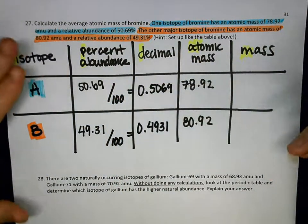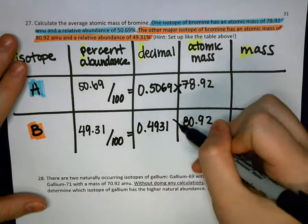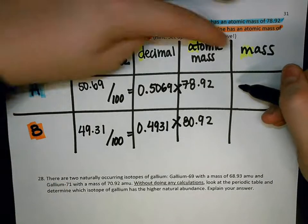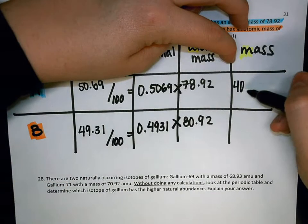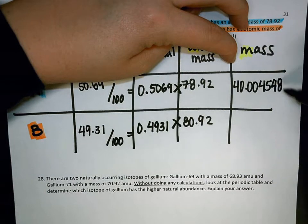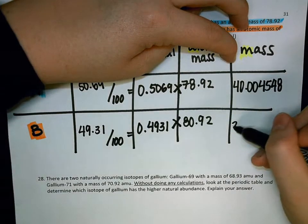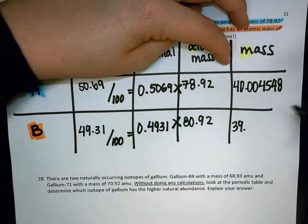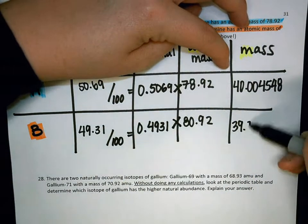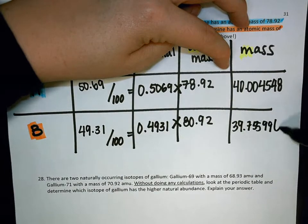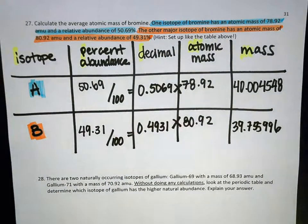Now I've got to take my decimal percent and multiply it by the atomic mass. I'm going to get 40.004548, and I'm writing out all these decimals because we're doing calculations here. We want to maintain correct sig figs, and we don't know how many sig figs that's going to be yet because we haven't figured it out. I don't want to lose any of those decimals.